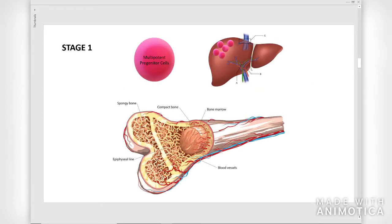Stage 1. It begins with the migration of the multipotent progenitor cells from the liver into the bone marrow. The progenitor cells continue to differentiate into lymphoid precursors and lymphoid progenitors that are responsible for the B cell lineage.